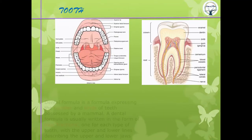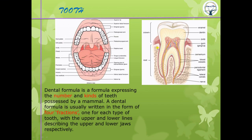The tooth structure: the upper part is the crown, below is the neck, and the lower part is the root. Enamel is the hardest substance in the body, made up of calcium carbonate and calcium phosphate — so eat plenty of calcium for strong teeth and bones. Enamel is secreted by ameloblasts; dentine, just below enamel, is secreted by odontoblasts.